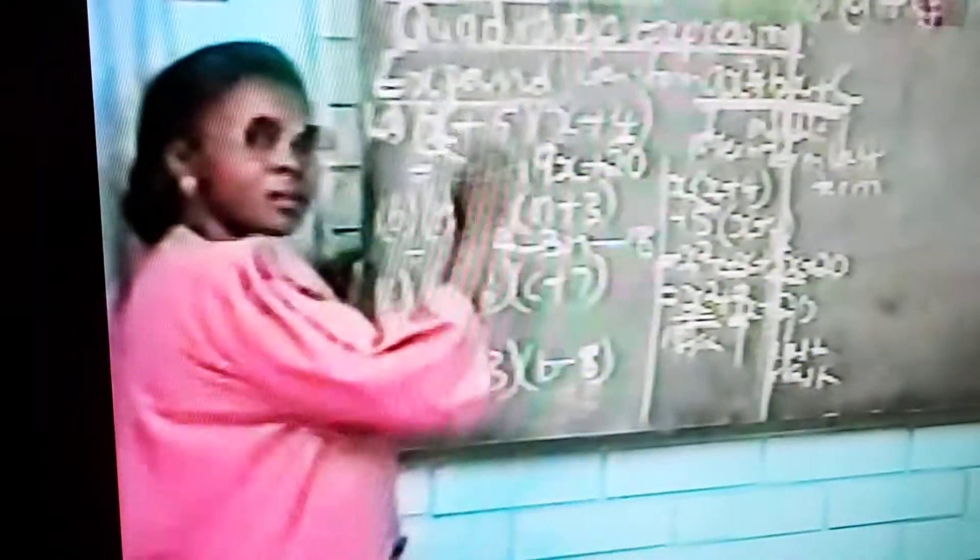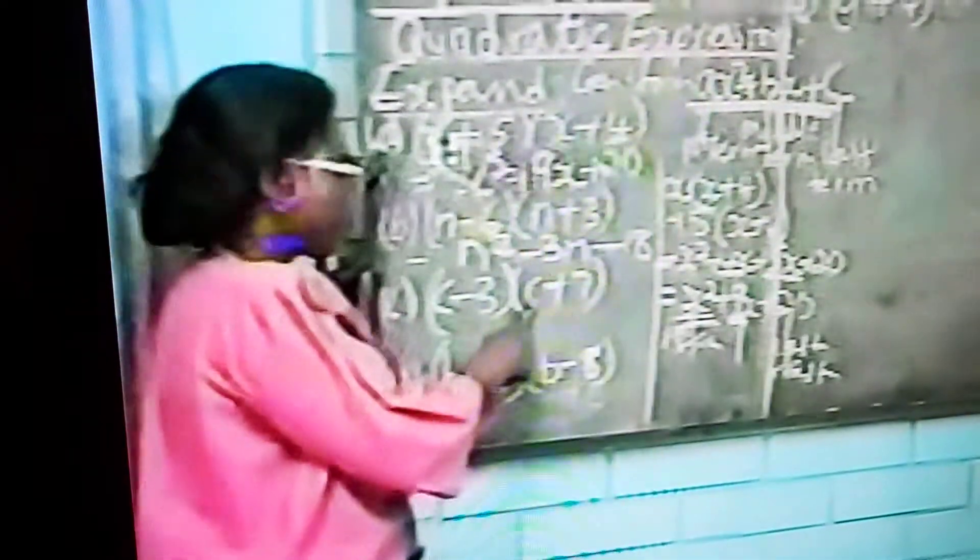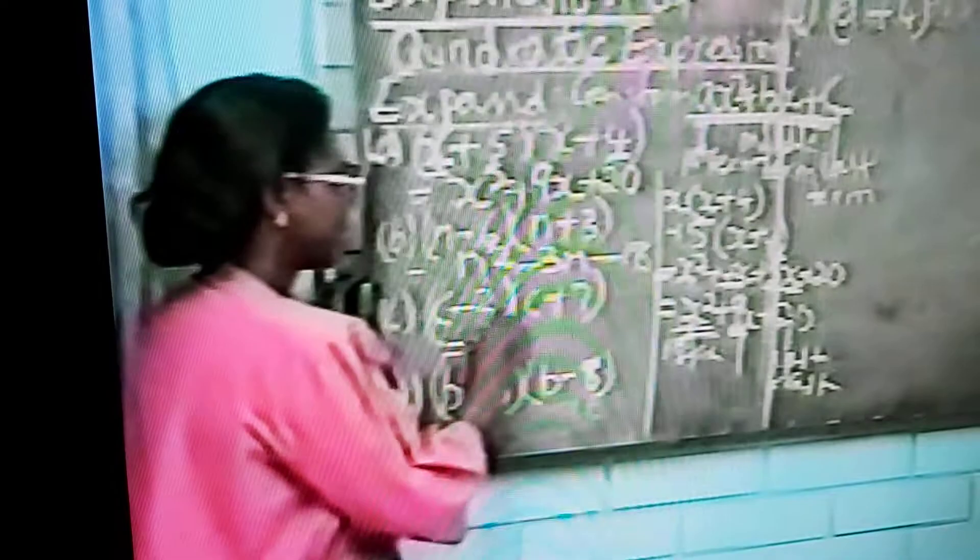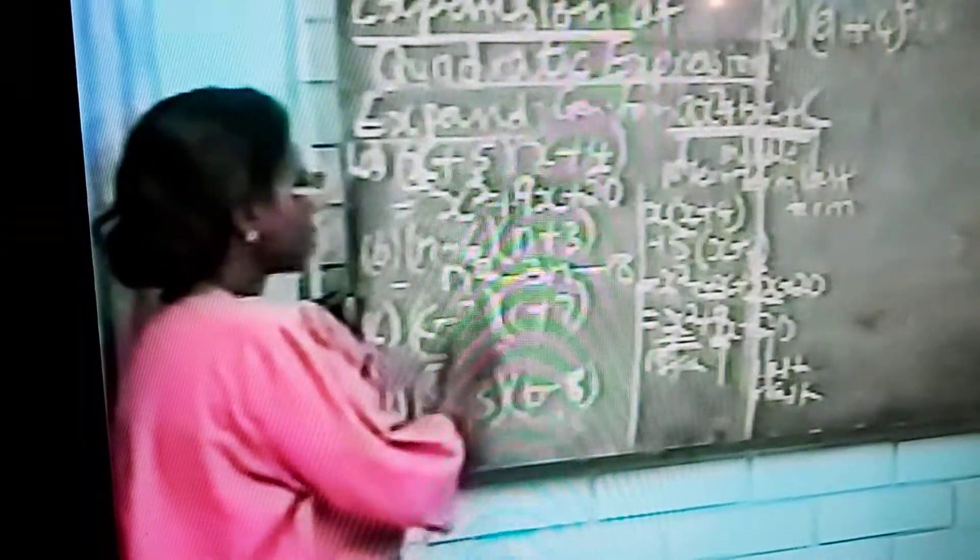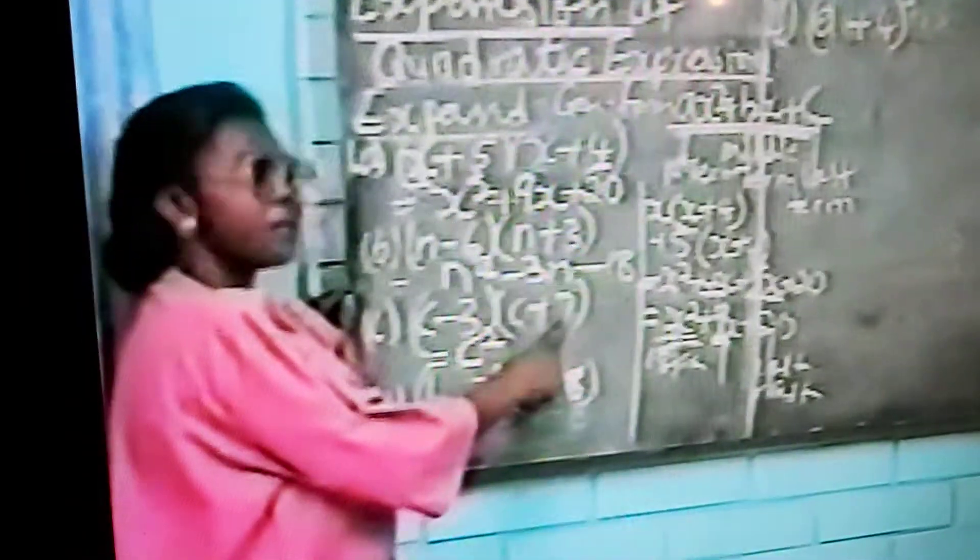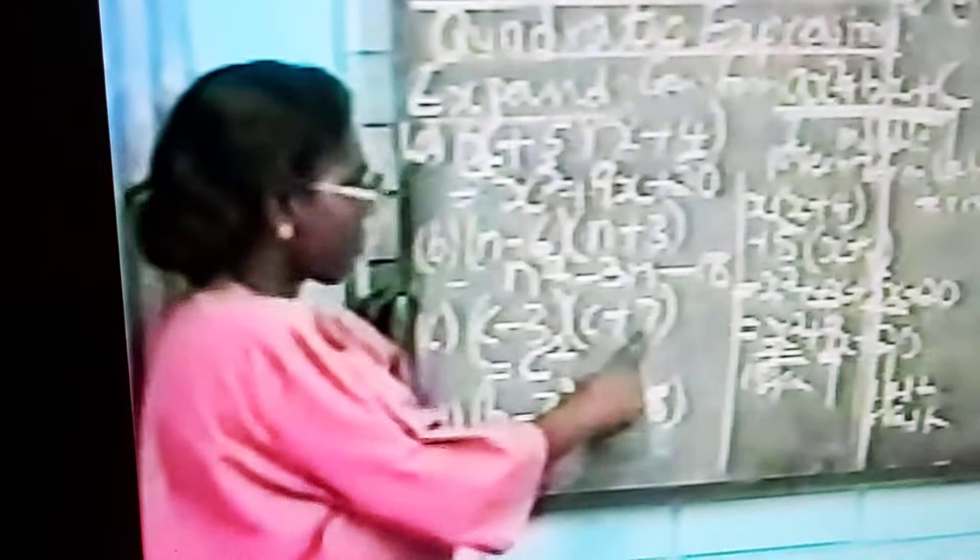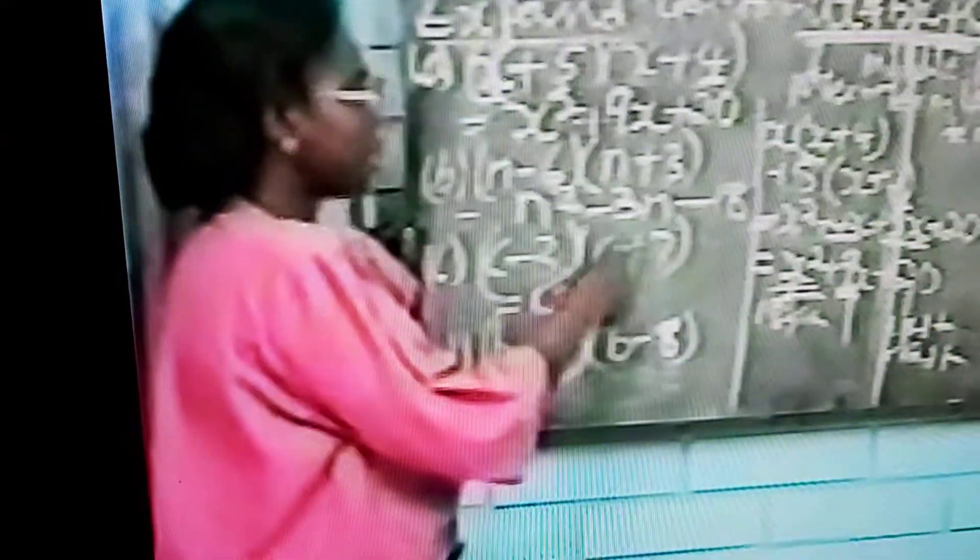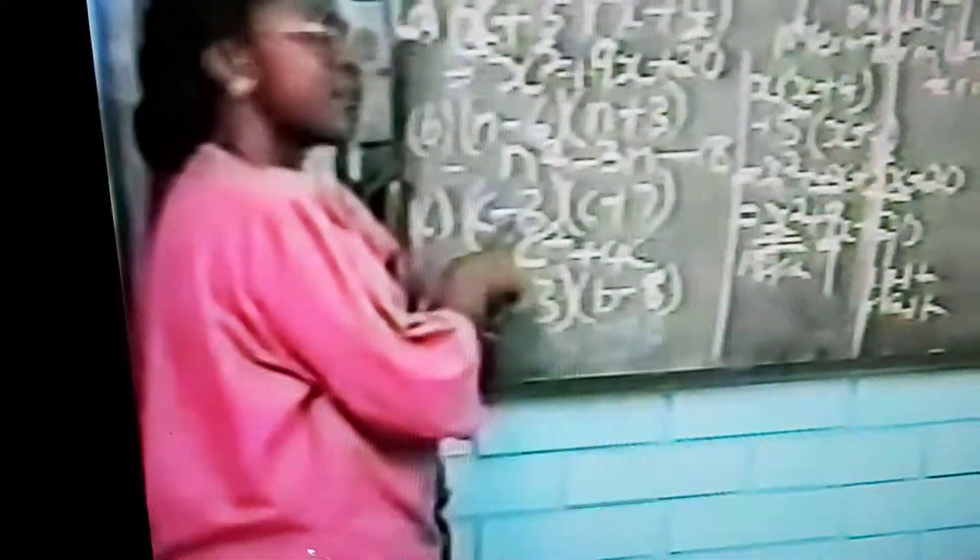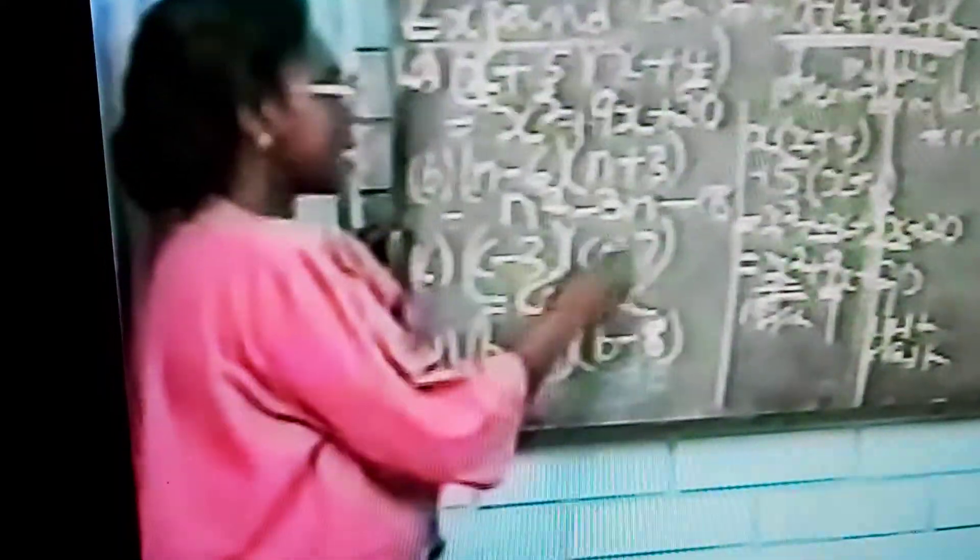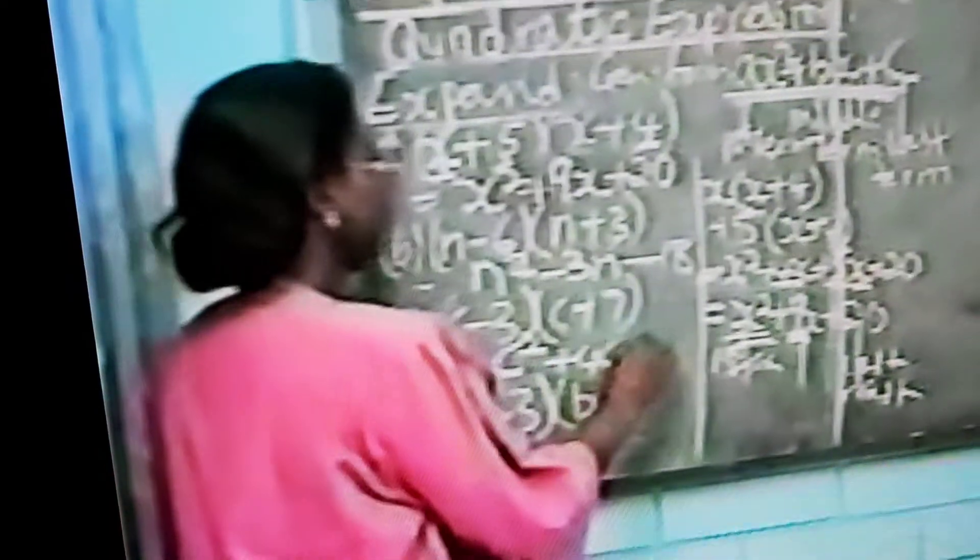So let's go to the next one. c times c to get the first term. That will give us c squared. To get the middle term, what do we do? We add the two constants here. So minus 3 plus 7 will give us plus 4. You have minus 3, you have plus 7. When you pay back the 3, you still have 4. So it's plus 4c. Then the last thing is minus 3 times plus 7. Minus 3 times plus 7 will give you minus. 3 times 7 will give you 21.